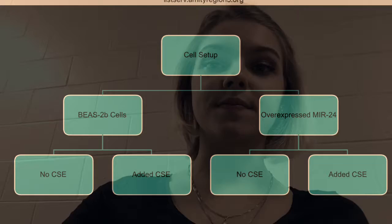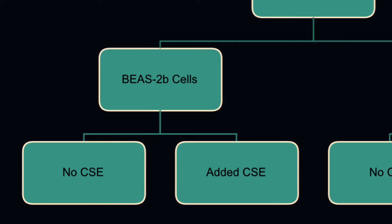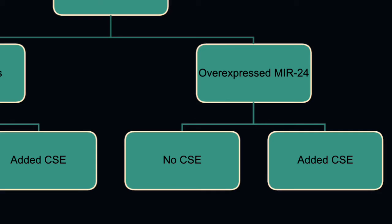It was hypothesized that when exposed to cigarette smoke, cells with overexpressed miR-24 will respond with high percentages of dead cells. This will be tested by culturing four sets of BEAS-2B cells, which are lung epithelial cells. There will be a control with no added CS, a control with 1%, 2.5%, and 5% added CS, a mimic control with overexpressed miR-24 and no added CS, and a mimic test sample with 1%, 2.5%, and 5% added CS.